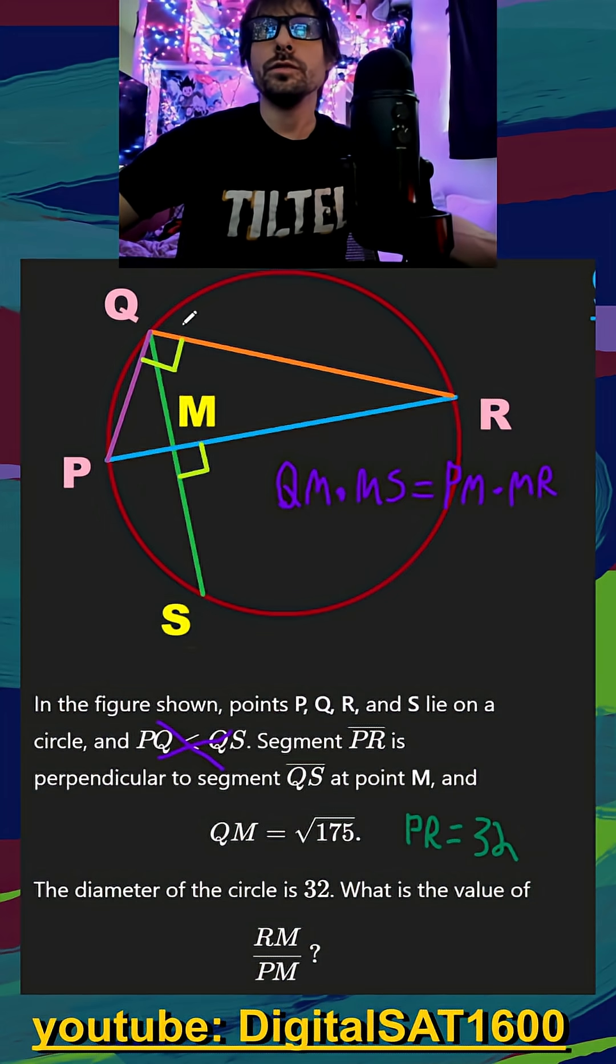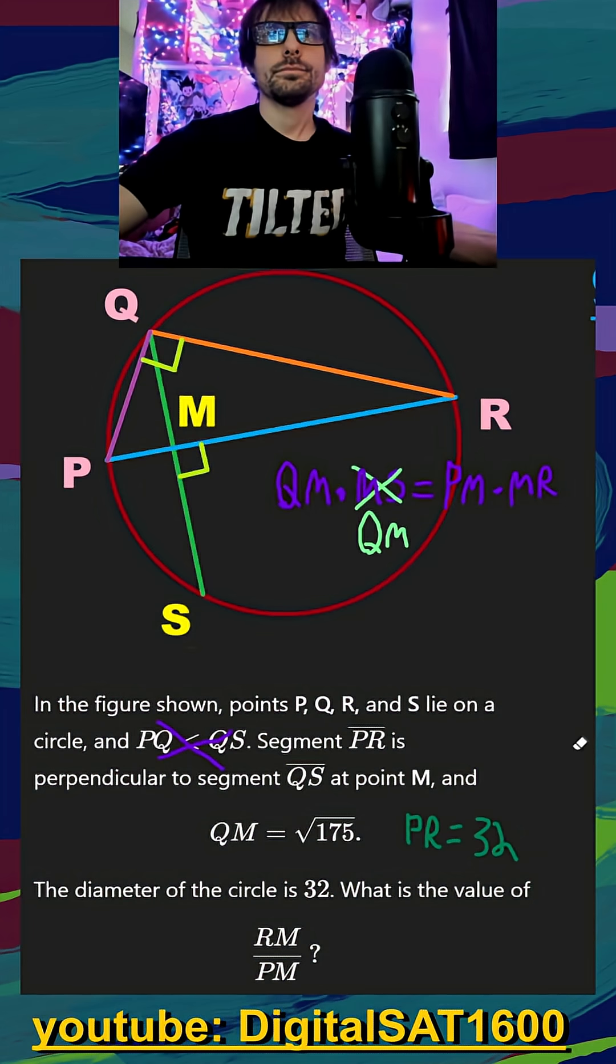Just like PR cuts our circle into two equal halves, any lines that go across it that are perpendicular will also automatically chop that into two equal halves. So that proves that QM is equal to MS. So we can actually just get rid of this and replace that with QM. And that really helps us because we already know that QM is equal to square root of 175. So if I just do square root of 175 times square root of 175, well, that should just get us 175 on the left side of my equation here.